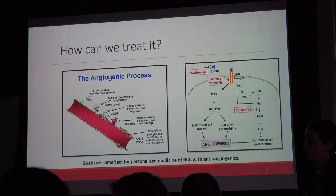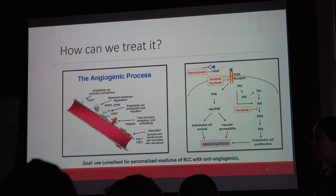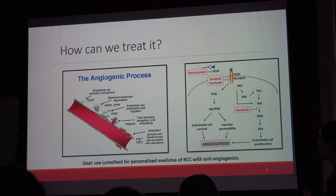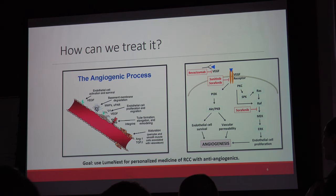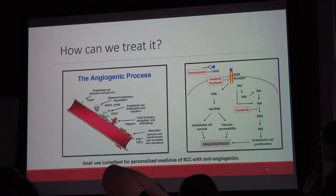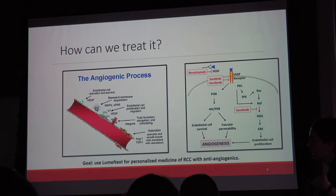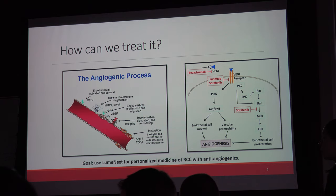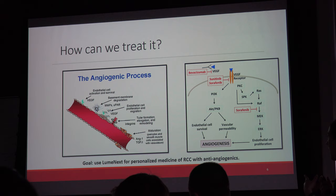Most RCC tumors are resistant to conventional therapy, so the way we treat them is with anti-angiogenics. A quick reminder: angiogenesis starts with activation of a vessel via growth factors, then cells degrade the basement membrane, start proliferating and migrating, and eventually a new vessel gets stabilized, pruned, and matures. Anti-angiogenics prevent the binding of VEGF to its receptors, or stop the downstream cascade of VEGF receptors.